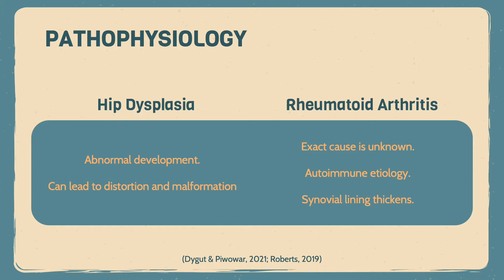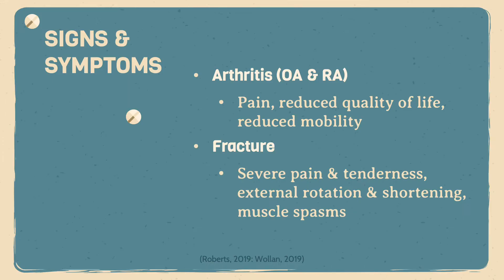Hip dysplasia is the abnormal development of the anatomical structures of the hip, which can evolve over time. This can lead to distortion and malformation of the hip, and may be linked to genetics or environment. With rheumatoid arthritis, the exact cause is unknown; however, it may be a combination of genetic and environmental factors, and is believed to have an autoimmune etiology that causes thickening of the synovial lining.